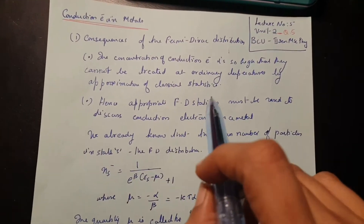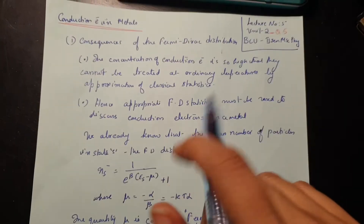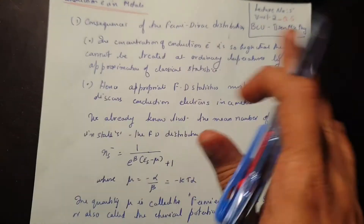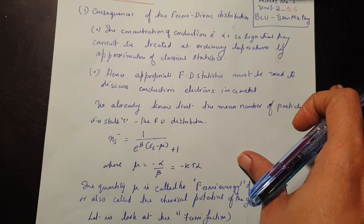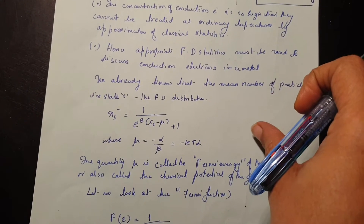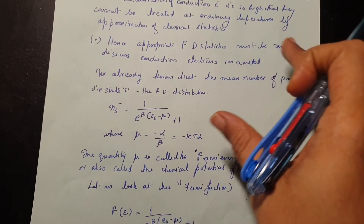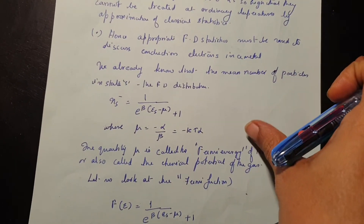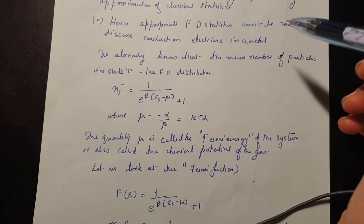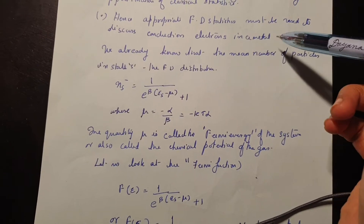Initially, when we consider conduction electrons in metals, we assume there is no mutual interaction. But at a certain point we see that the number of conduction electrons in metals is so huge — it is like a sea of electrons — so we have to treat it with Fermi-Dirac statistics.